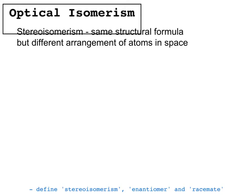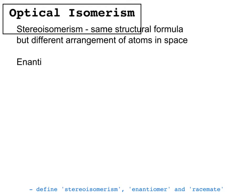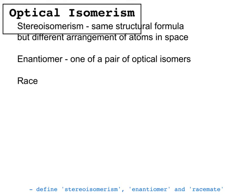That's stereoisomerism, and it's in your book if you want to look further. The next definition is an enantiomer, which describes one of a pair of optical isomers that are non-superimposable mirror images. And finally, we have racemate, or racemic mixture, which is what you'll often be asked about in your exam — that is a 50-50 mixture of two enantiomers.